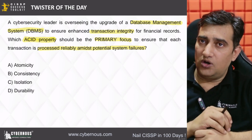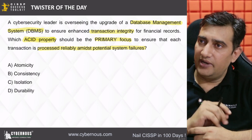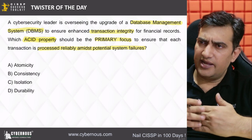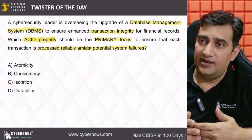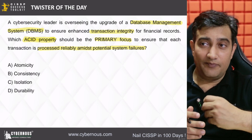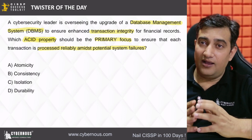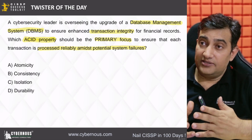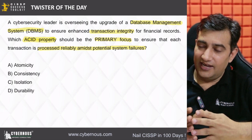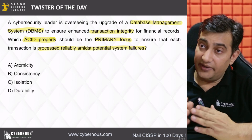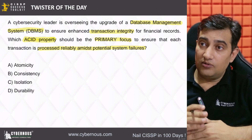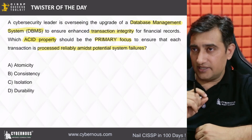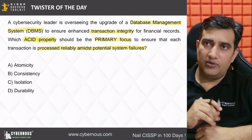D stands for durability, which means that once a particular transaction has been committed, it has to remain there. For example, you booked a flight today and when you reach the airport, the airport staff should not say this transaction got reverted. Once a commit has happened, that transaction should be durable at all times. This is a very vital property of a database.